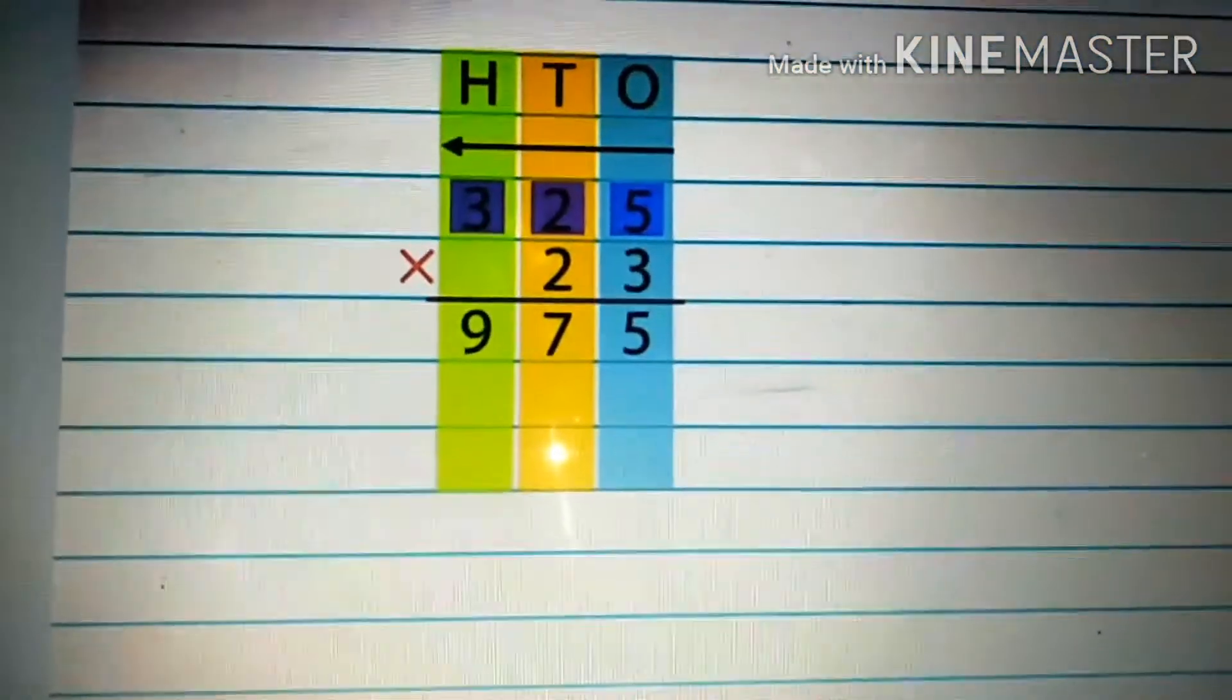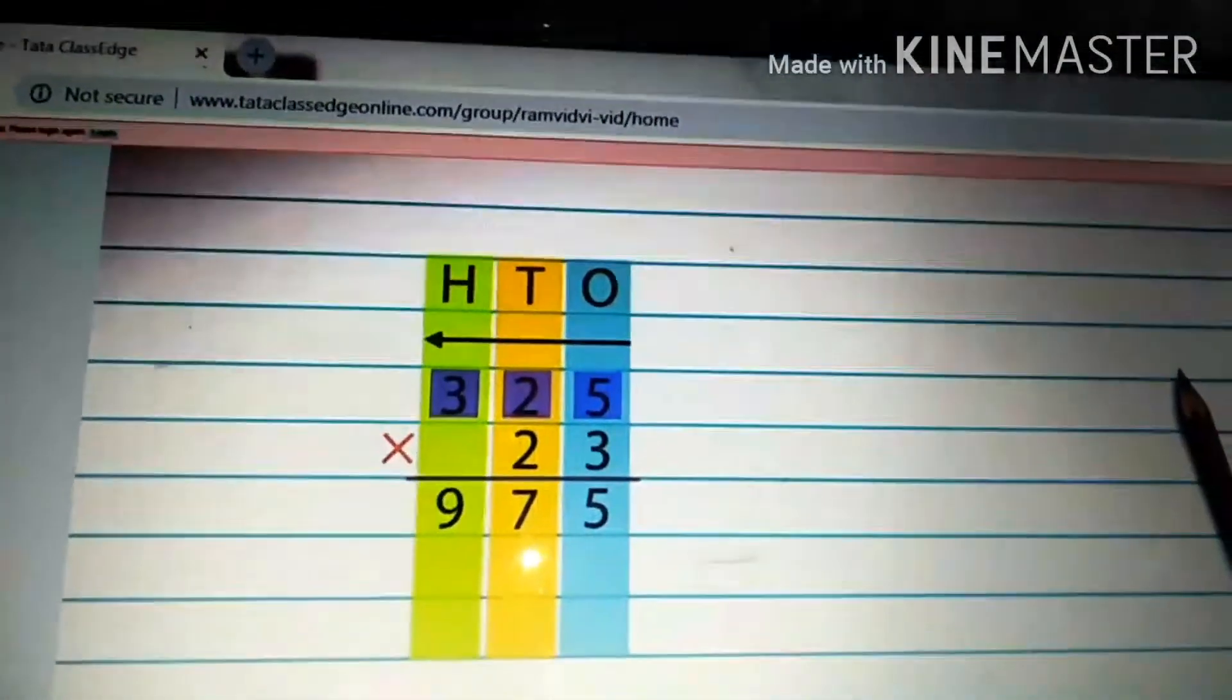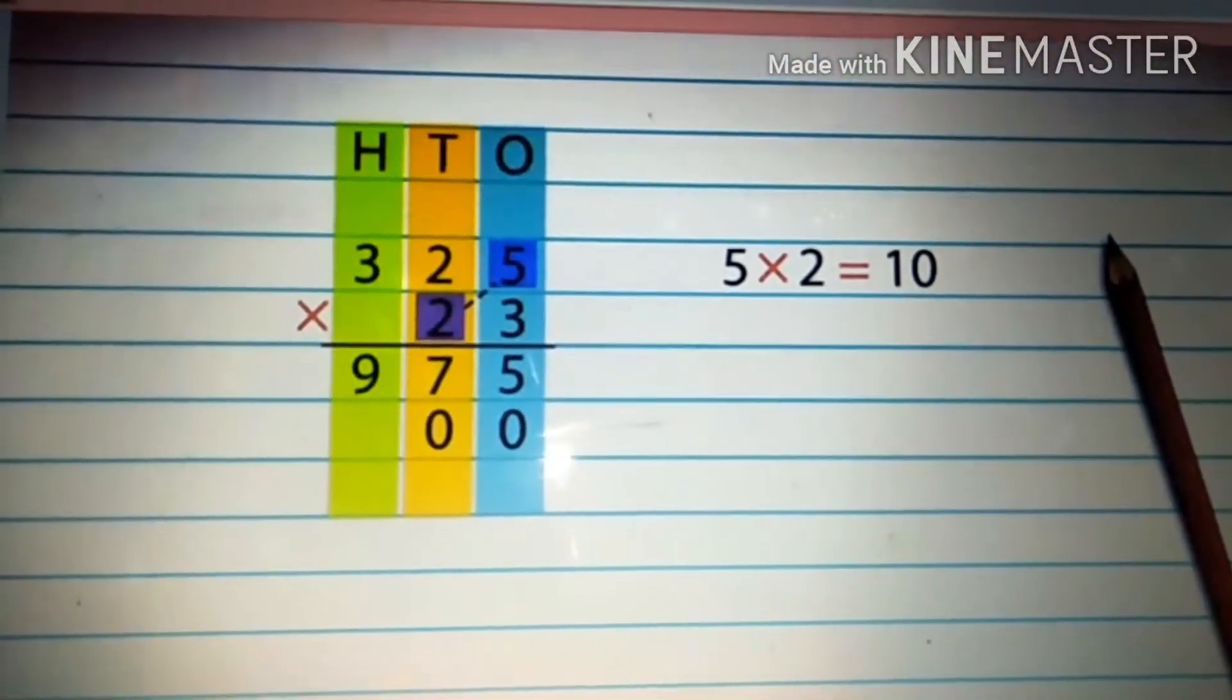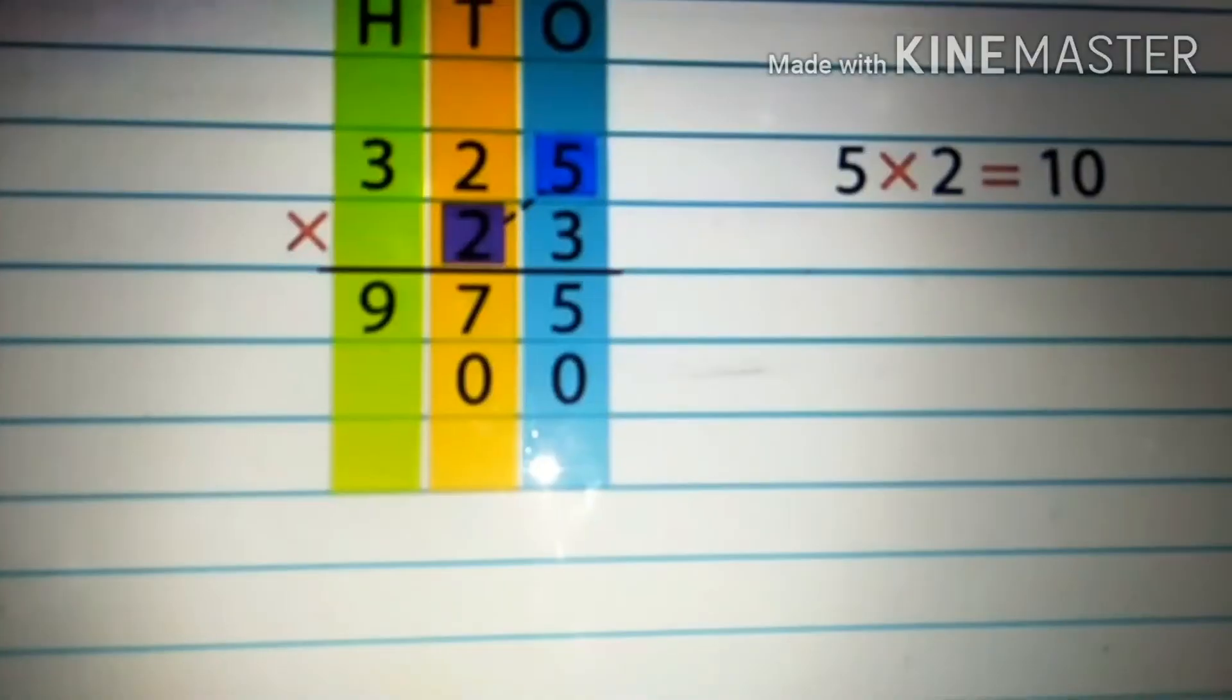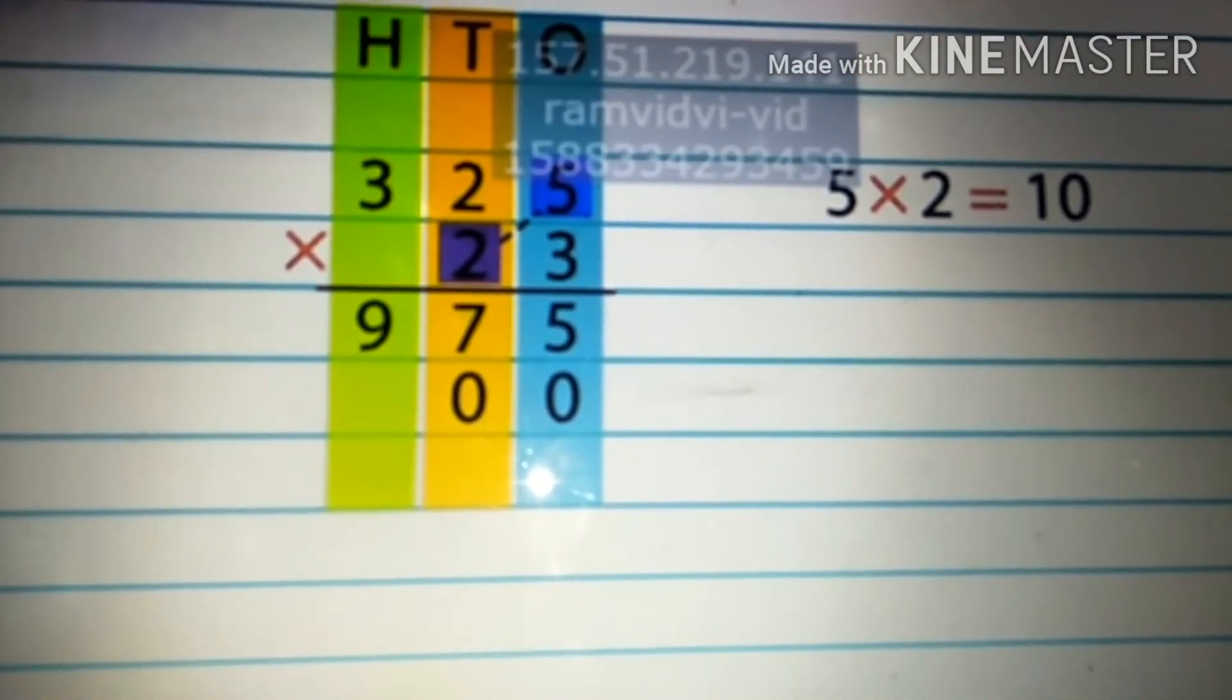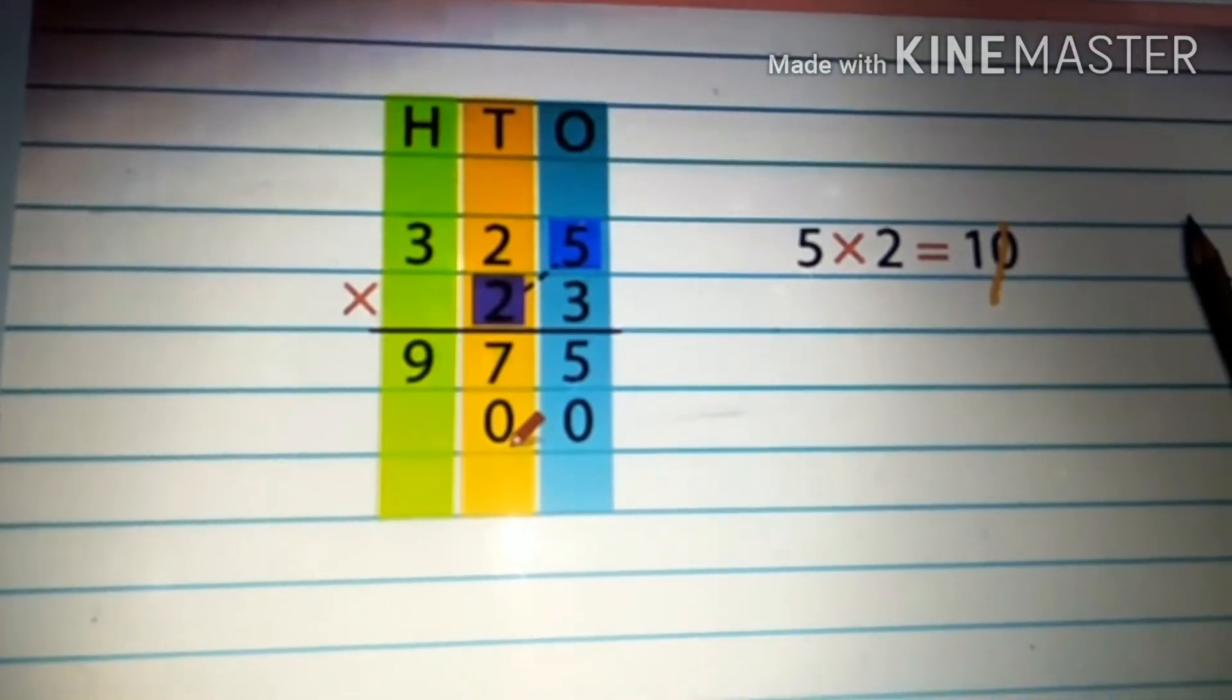What do we do next? Next, we multiply the ones, tens, and hundreds of the first number one by one with the tens of the second number. But before that, we need to add zero in the tens column, as we are carrying out multiplication with the digits in the tens column. Now, five multiplied by two gives ten. We write zero in the tens column and carry over one to the hundreds column.